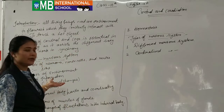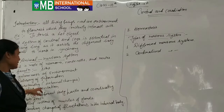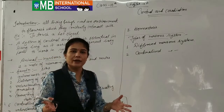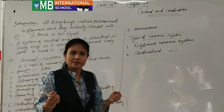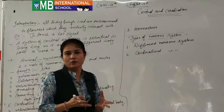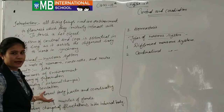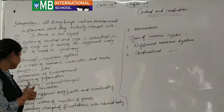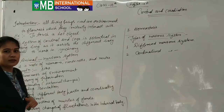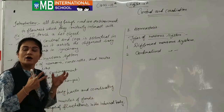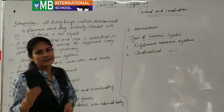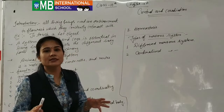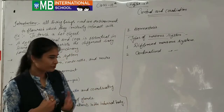The third function is understanding external changes — changes that occur in our external environment, such as hot, cold, or rainy seasons. Any changes in our environment are related to our understanding, and these are also known as senses given by the external environment. The fourth function is generating sensation — different senses created by our nerves in our body in response to the external environment, because without any environment we cannot feel any changes.